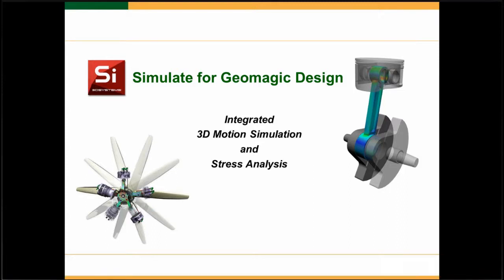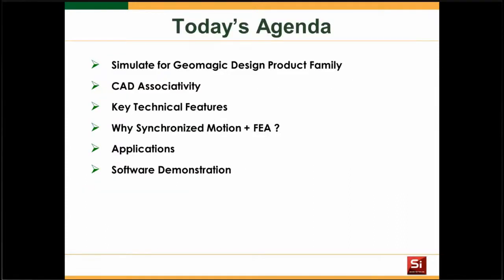I've got a short PowerPoint slide to present a few things first. The agenda includes a look at the product family — there are two different products — and we'll clarify the difference between them. We'll talk about CAD associativity, the real benefit of having this embedded with Geomagic Design, key technical features, and then a very important feature: synchronized motion plus FEA.